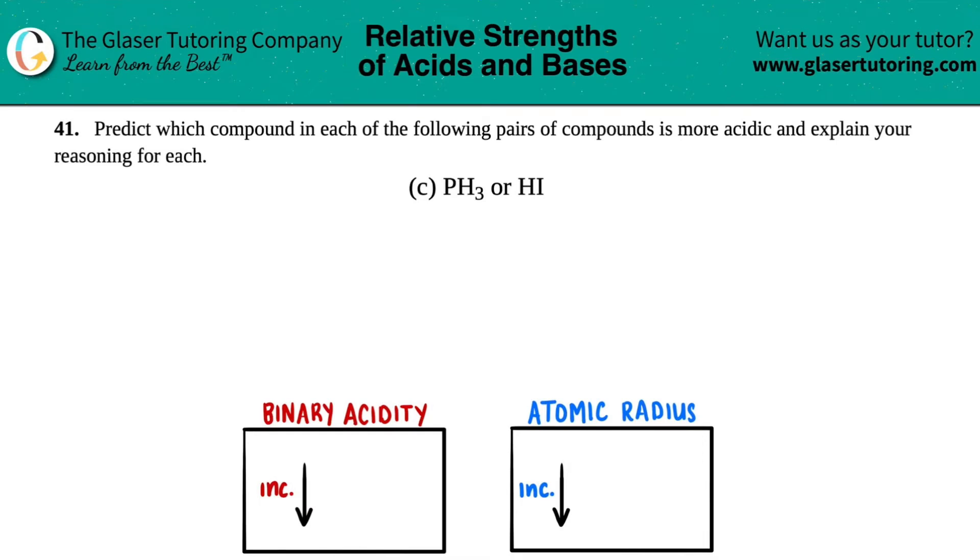Number 41: Predict which compound in each of the following pairs of compounds is more acidic and explain your reasoning for each. In this case, we have to figure out which one of these two compounds is more acidic: PH3 or HI. Well, first we have to identify what types of acids we're looking at. There's two types.